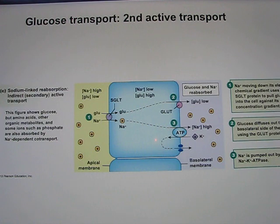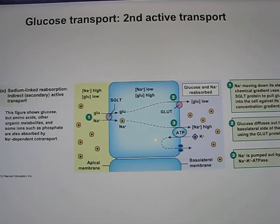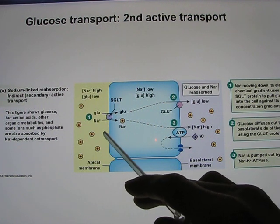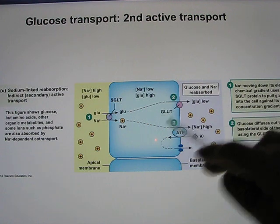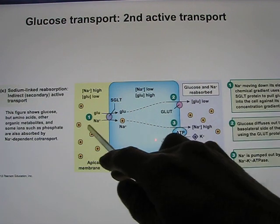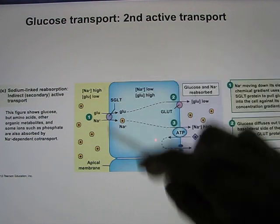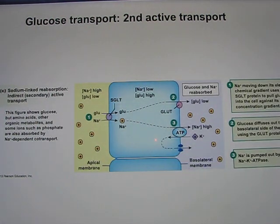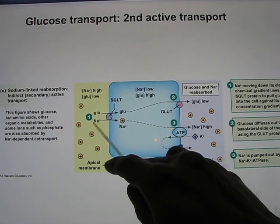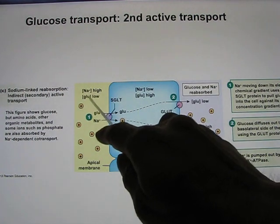Now let's look at glucose. Glucose is a small molecule, so it gets filtered into the lumen. The glucose gradient is low in the lumen, high in the epithelial cells, and low again in the interstitial fluid. On the apical membrane, moving glucose from low to high requires active transport — specifically secondary active transport using the sodium-glucose symporter (SGLT), which uses the sodium concentration gradient as its energy source.